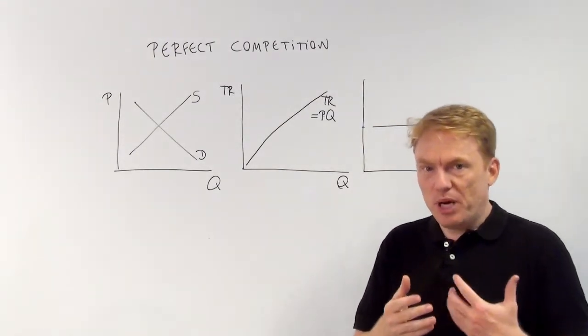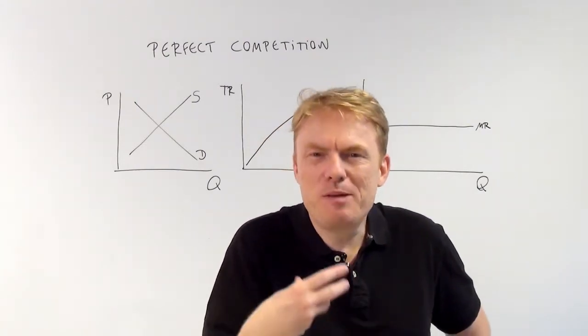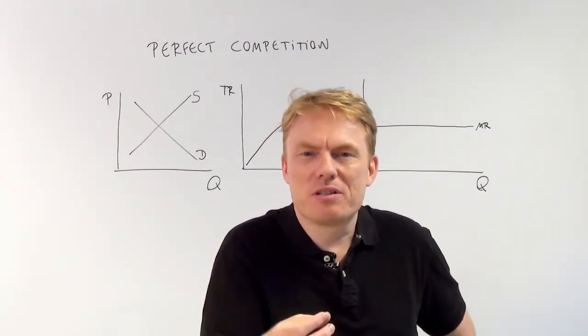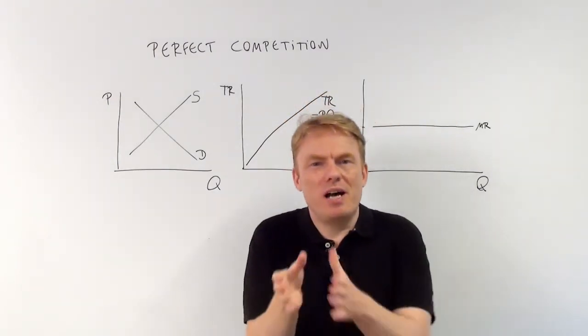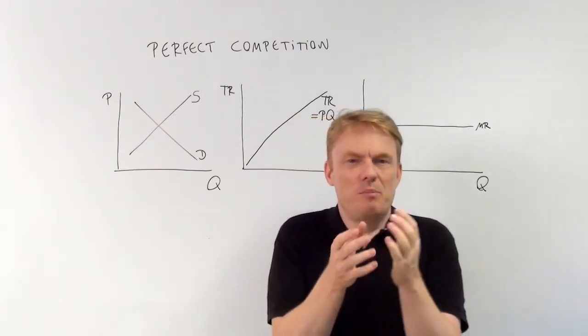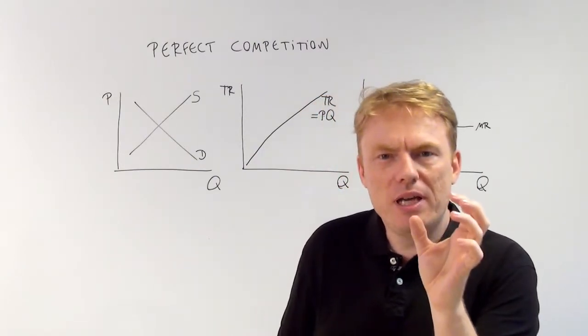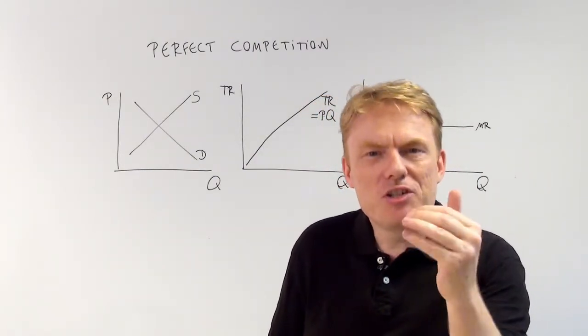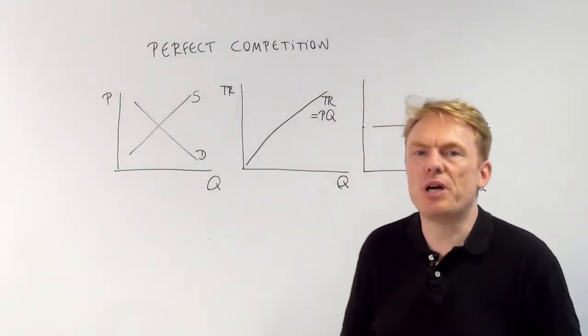Firms are price takers because they don't have any possibility of setting the price. Compared with a monopoly, a monopolist can say, I want to have five dollars for the product. But a company in perfect competition just has to take the price, has to accept the price. So they're called price takers.